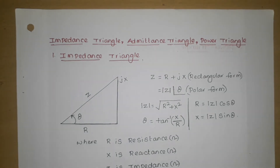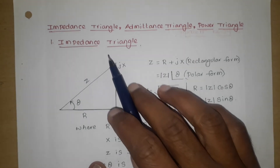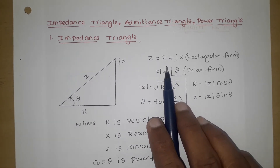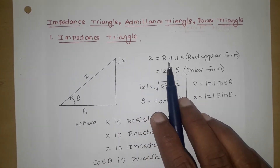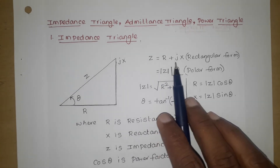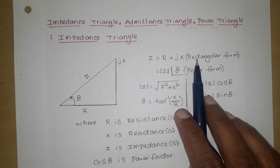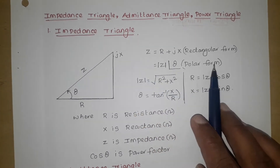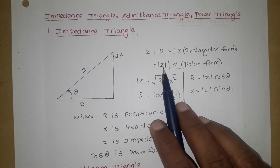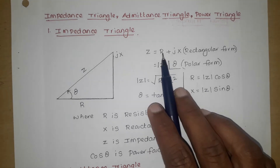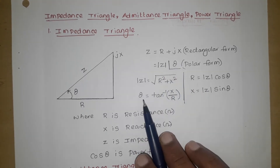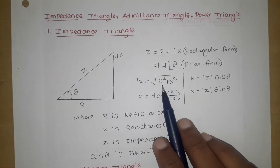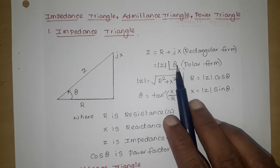Impedance triangle. So Z is the impedance, and we can write Z equals R plus jX, which is the rectangular form. The same Z we can write as mod Z at an angle of theta, which is the polar form. Here mod Z equals root over R squared plus X squared, and theta equals tan inverse X by R. If we know R and X, we can find mod Z and theta.